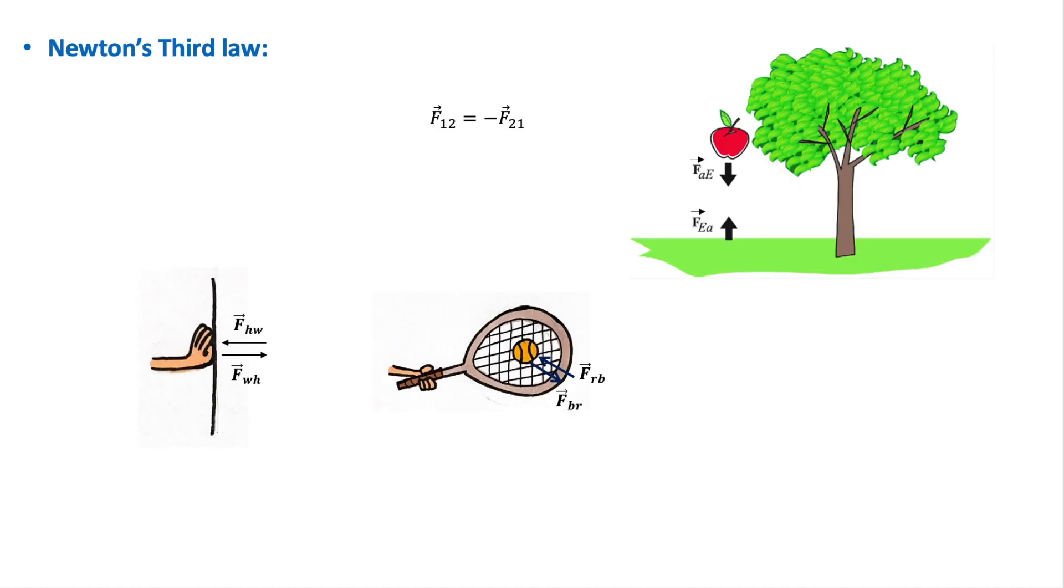So now let's consider Newton's third law. So a force acting on an object is always due to another object or the surrounding environment. And Newton's third law showed that if body 1 exerts a force F21 on body 2, then body 2 will exert an equal and opposite force on 1. So F12 is equal to minus F21.